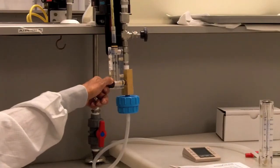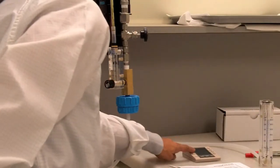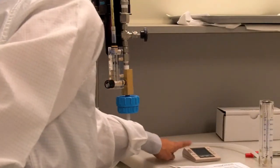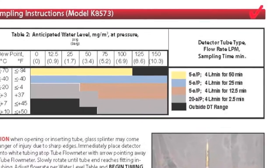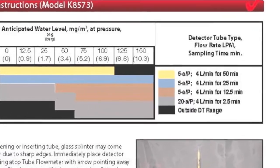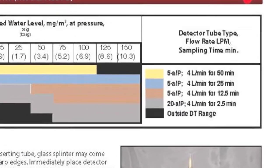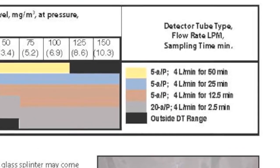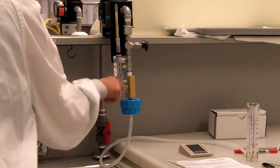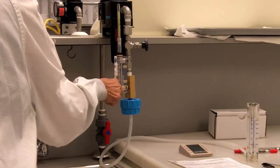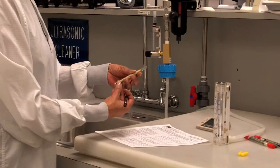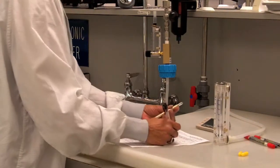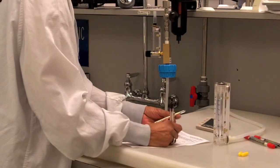Adjust the flow rate to 4 liters per minute if needed and begin the second timer. Sampling times vary from 2.5, 12.5, 25, and 50 minutes, depending on the outlet pressure and the anticipated dew point. At the end of the sampling time, close the needle valve, remove the tube, and immediately read and record the number associated with the color change of the tube on the datasheet.